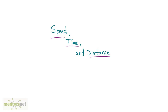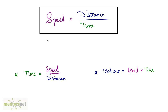This chapter is on speed, time, and distance. We have: speed equals distance divided by time, time equals distance divided by speed, and distance equals speed times time. Everybody knows these formulas — let us put them to test by solving a question.